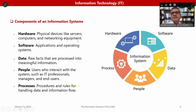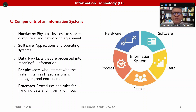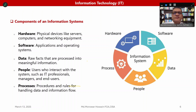The components of an information system include hardware, software, data, people, and process. Hardware refers to physical devices such as servers, computers, and networking equipment — things we can touch and see. Software includes applications and operating systems, which we cannot touch. Data consists of raw facts that are processed into meaningful information; from data we get information, and from information we build knowledge.